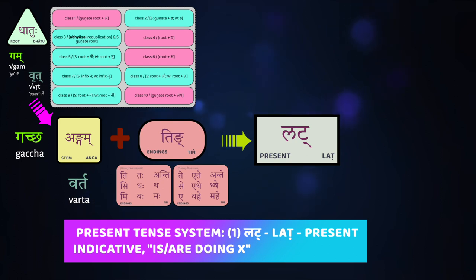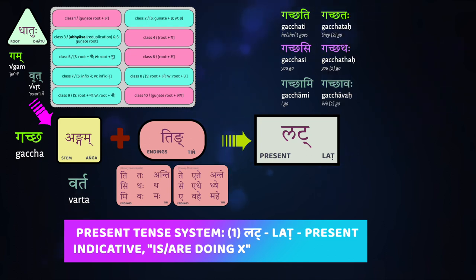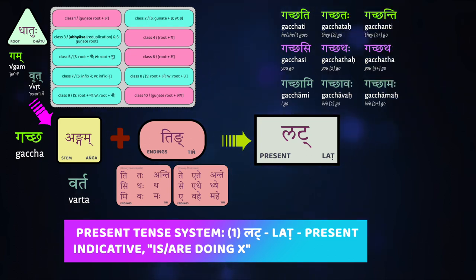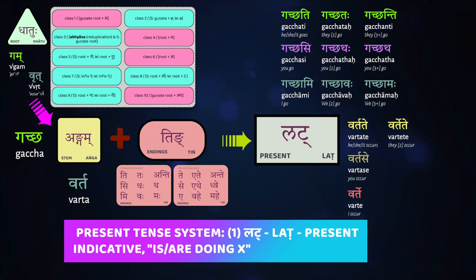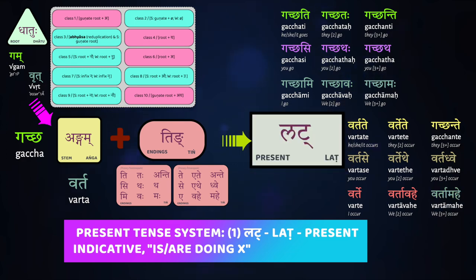Parasmaipada endings, just to review, are: ti, si, mi, taḥ, taḥ, vaḥ, anti, tha, maḥ. Ātmanepada endings are: te, se, e, then ete, ete, āvahe, and then ante, dhve, and āmahe. That's the lāt — the present stem plus regular endings.